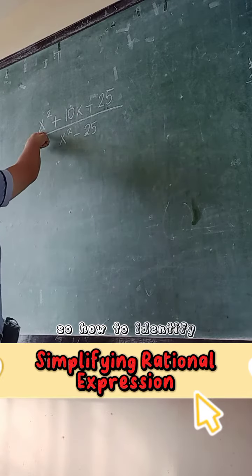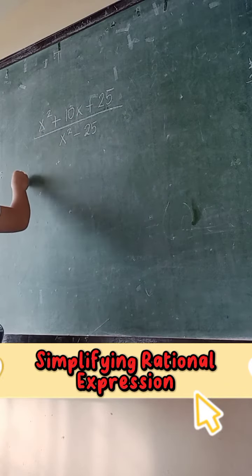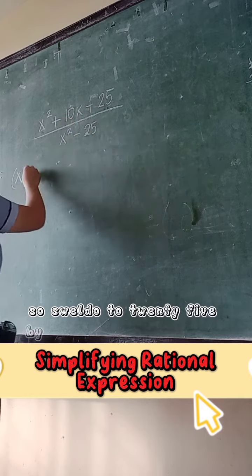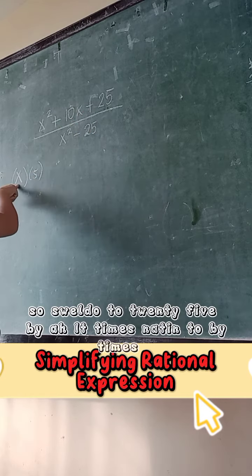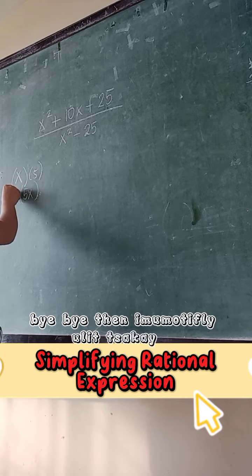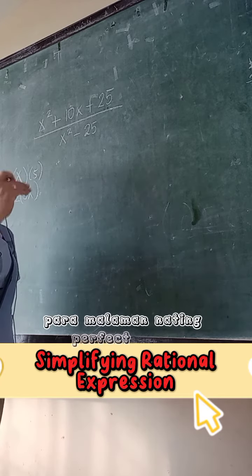What is the square root of x squared? x. Square root of 25? 5. I-times natin to, 5 times x. 5. Then imumultiply ulit sya kay 2 para malaman natin perfect square. Kailangan, ang lalabas sa product na to ay yung middle term.